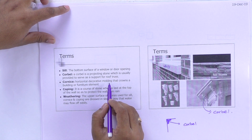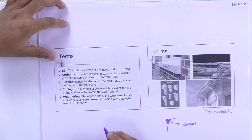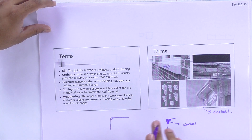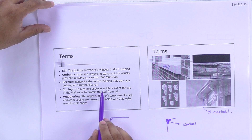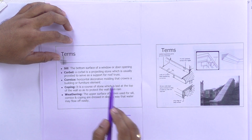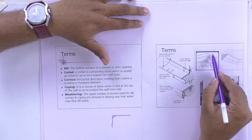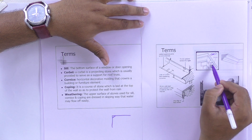Next one is cornice — a horizontal decorative molding that crowns a building or furniture element. In this image you can see the corner of the wall. This is the building ceiling, this is the wall, and the connection between the wall and the ceiling is the cornice, which also protects the wall from rain.